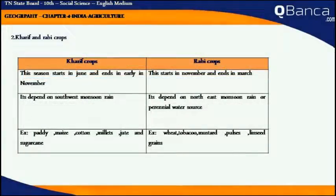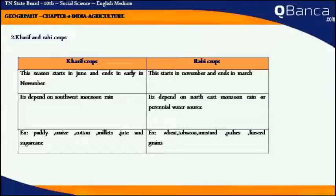Kharif and Rabi crops. The Kharif crop season starts in June and ends in early November. The Rabi crop season starts in November and ends in March. Kharif crops depend on southwest monsoon rain, while Rabi crops depend on northeast monsoon rain.